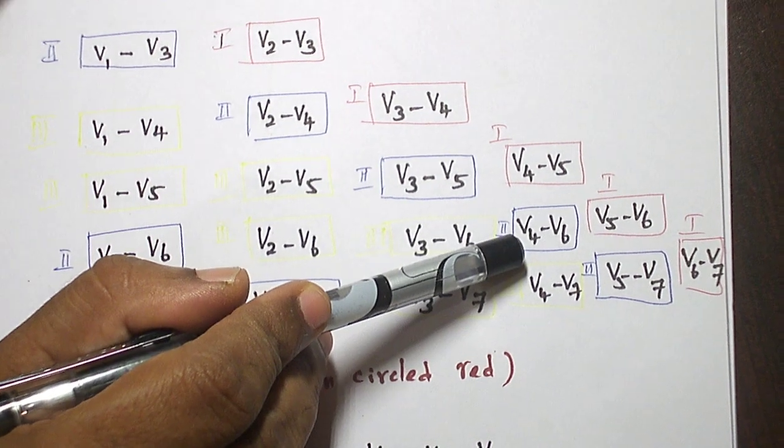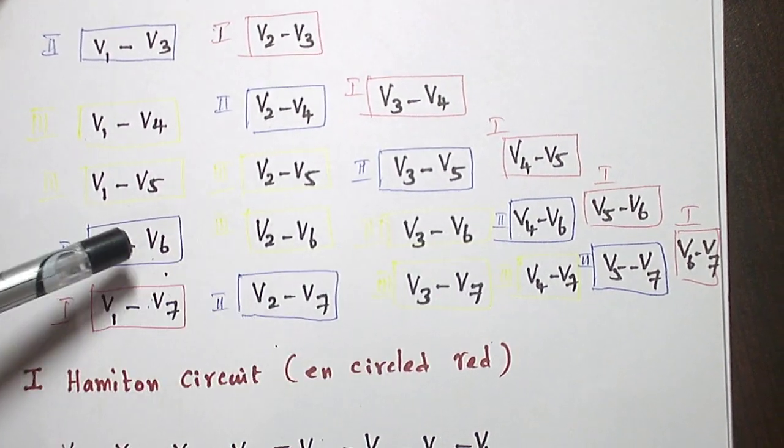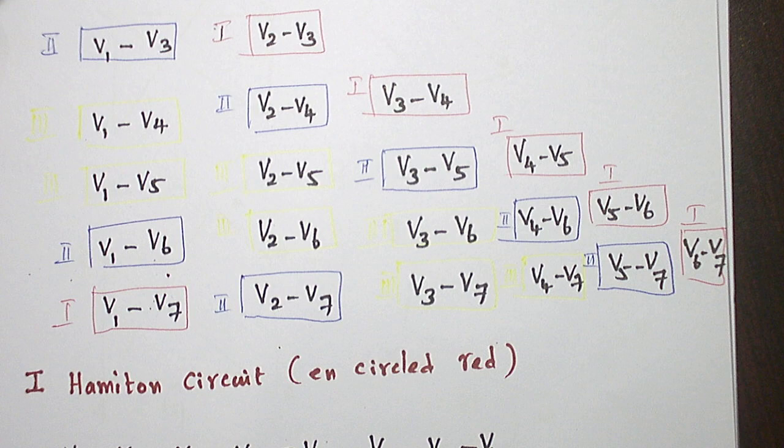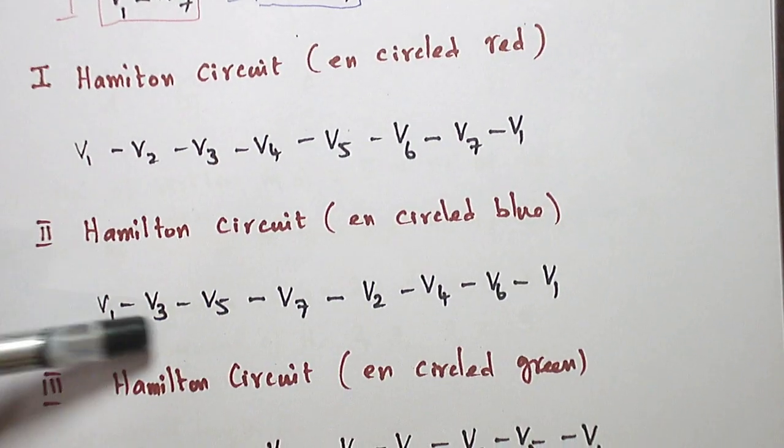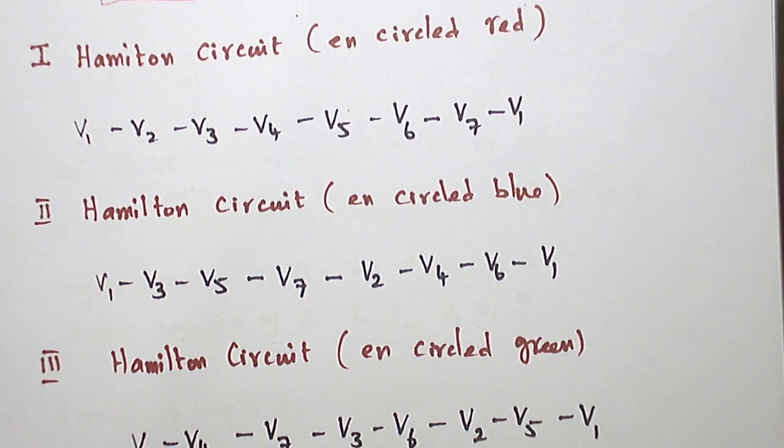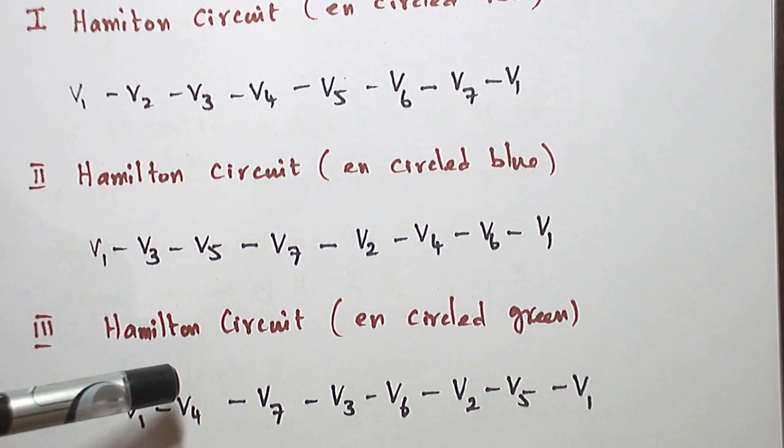Take an edge V4 to V6. Take an edge V6 to V1. And thus, all the vertices are passed through exactly once. We got a Hamilton circuit.